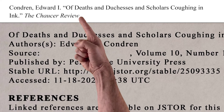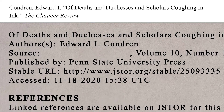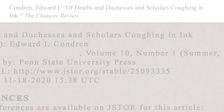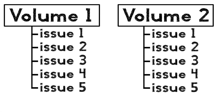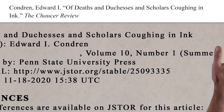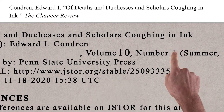No period after this title, though, because journals don't just have titles — they have volumes, issues, and dates. Each volume contains multiple issues. It's kind of like how TV shows are produced in seasons and episodes: seasons are like volumes, episodes are like issues. This article came from Volume 10, Issue 1.